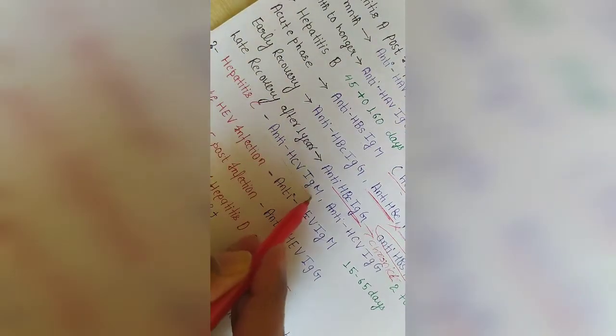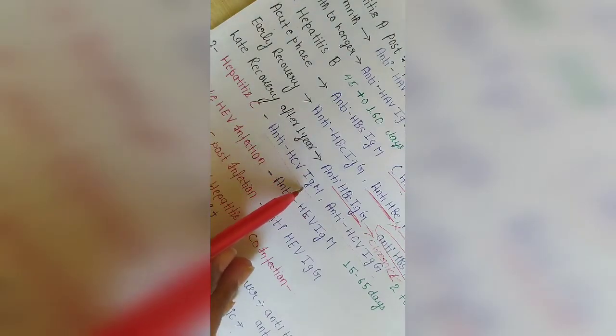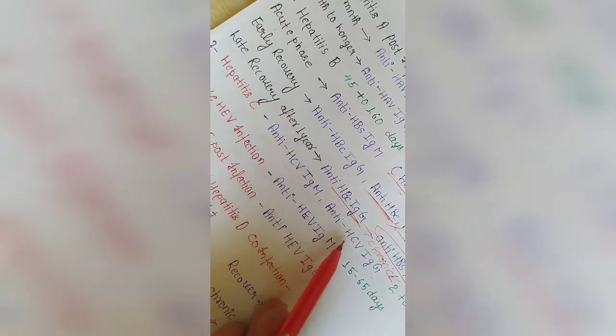Now hepatitis C. Hepatitis C also has two phases we can say: acute infection or chronic infection. In acute infection, anti-HCV IgM antibody. In chronic infection or post infection, anti-HCV IgG antibody. Incubation period is 2 to 6 months.